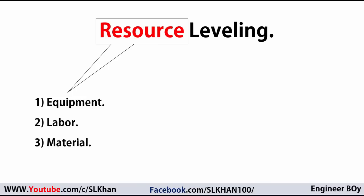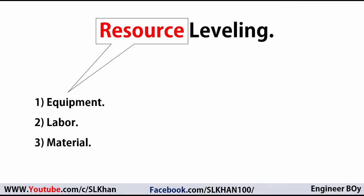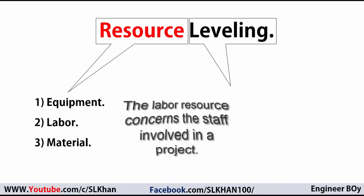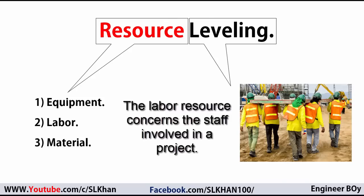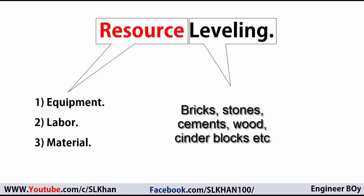Equipment resources are not permanently installed on site — these are temporary resources. For example, an excavator digs soil and is then taken away from the site, so an excavator is an example of equipment. Labor resources are the main manpower, with fixed salaries. Material resources, however, are permanently installed on site — for example, brickwork or stonework used to construct a building are permanent resources installed on the site.